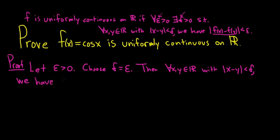the distance between f of x and f of y. So the absolute value of f of x minus the absolute value of f of y. So that's equal to, well, f of x is simply cosine x. Okay, cosine x, and f of y is simply cosine y. Okay, cosine y.